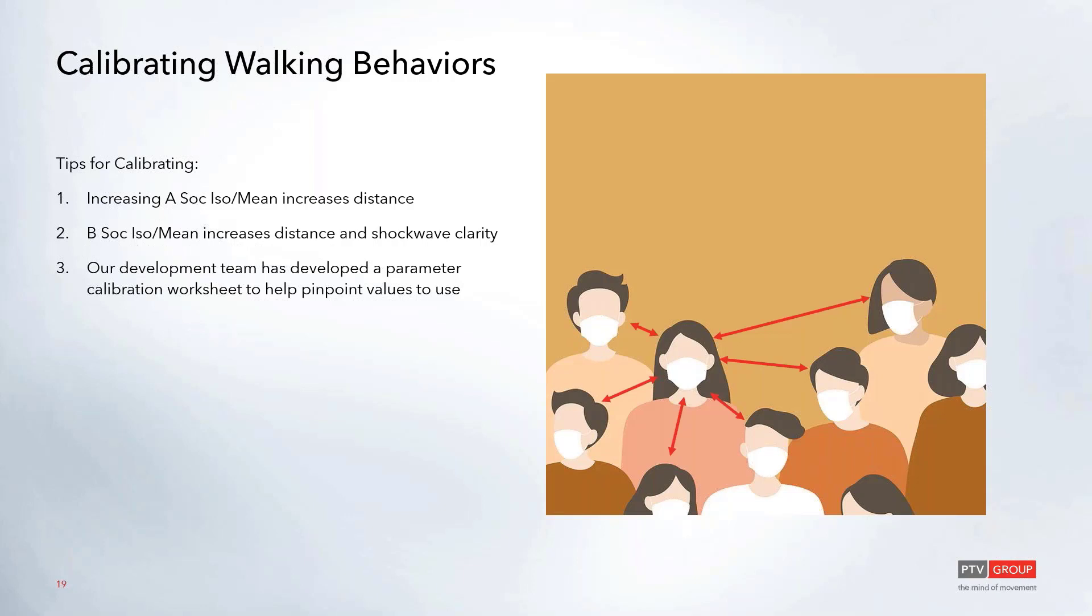B-social isotropic and B-social mean increase density as well to a lesser degree, but they also control shockwave clarity. If we're talking about queuing, for example, they will have a bigger impact in single file or banding or conflicting flows and things like that. You'll see that reverse shockwave parameter happening there.